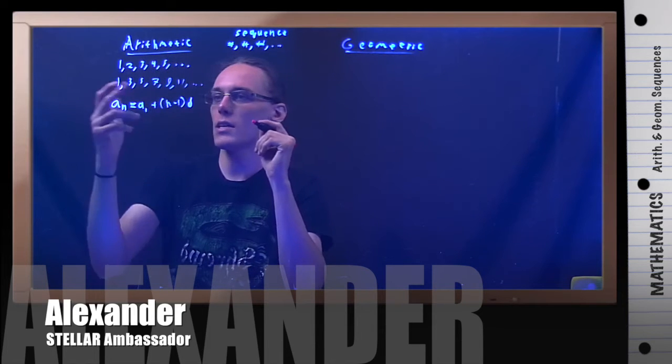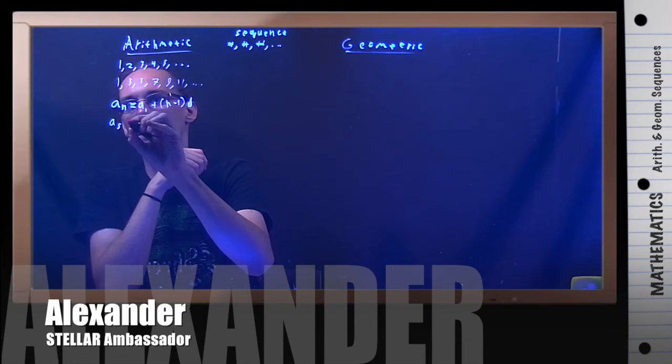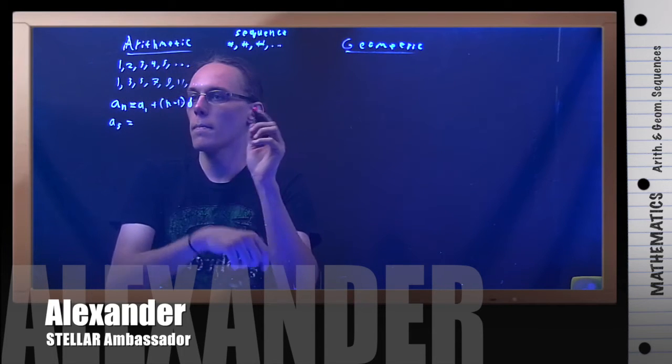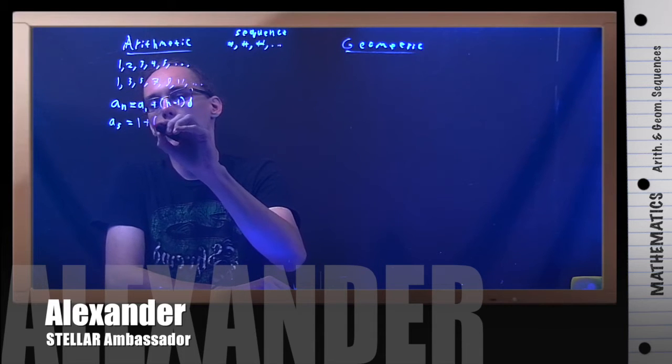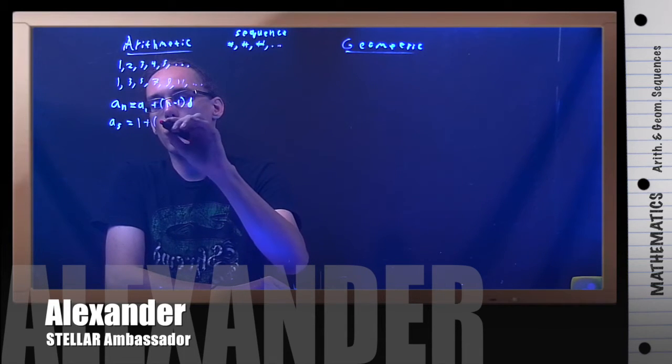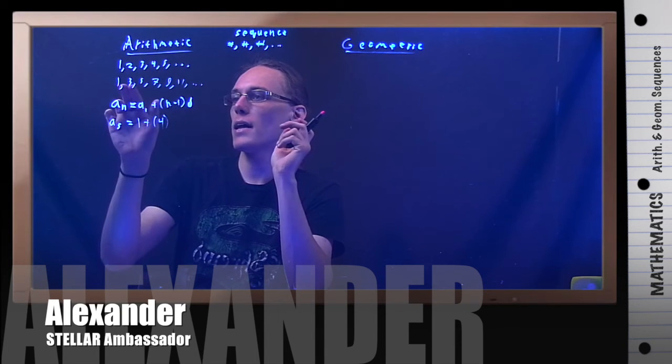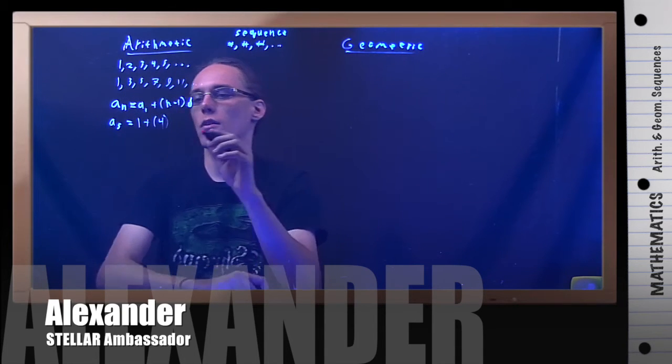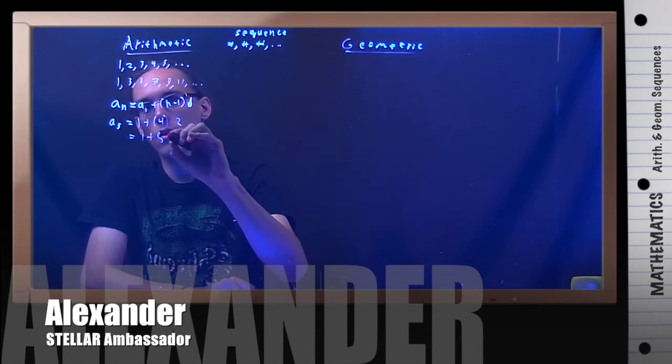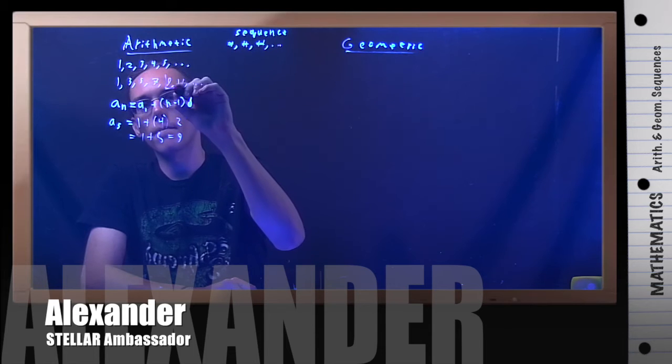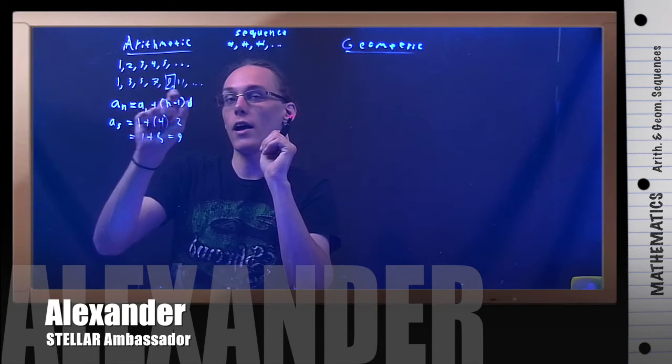So, a good example with this second one here is say I wanted the fifth term in the sequence. Then what I would do is I would take my first term, which is one, plus, well, five minus one would be four. And then the common difference here, if you look at that, is I'm adding two each time. So, that would be times two. And what do I get? Well, I get one plus eight, which is nine right here. And if you look at that, that's the fifth term, one, two, three, four, five.